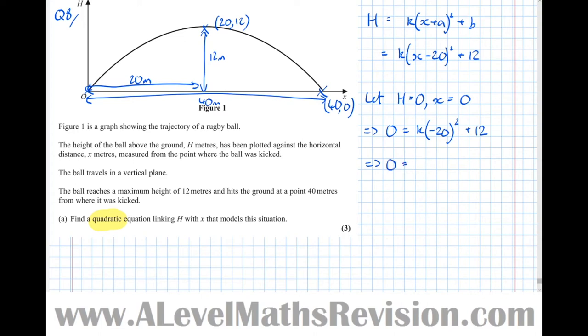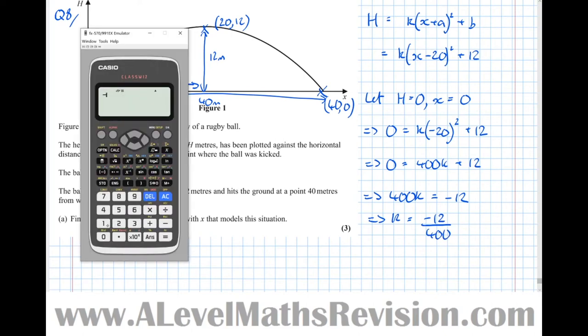Which means that 0 equals 400k plus 12, which means that 400k equals minus 12, which means that k equals minus 12 over 400. 12 over 400 equals minus 3 over 100 or minus 0.03.